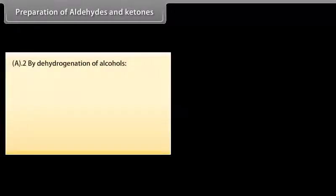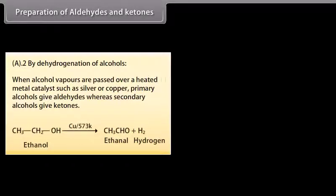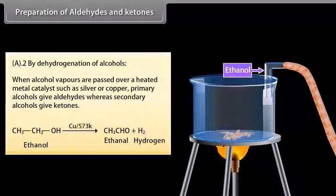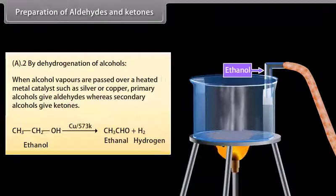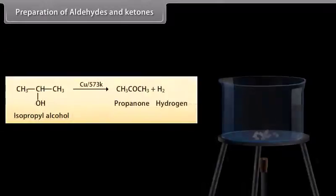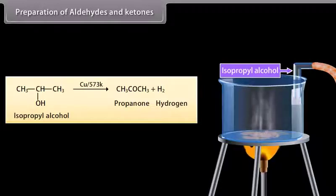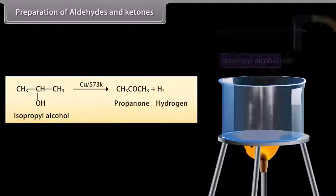Preparation by dehydrogenation of alcohols: when alcohol vapors are passed over a heated metal catalyst such as silver or copper, primary alcohols give aldehydes whereas secondary alcohols give ketones. When vapors of ethanol are passed over copper, ethanal is formed and hydrogen gas is released. When vapors of isopropyl alcohol are passed over copper, propanone is formed and hydrogen gas is released.